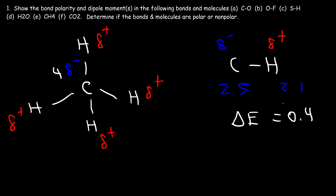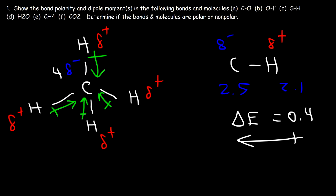The dipole moment points towards the electronegative carbon atom, giving us four arrows in the structure. If you draw the 3D structure and analyze the arrows correctly, the tetrahedral geometry is set up such that all dipole moments completely cancel each other, so the net dipole moment is 0. What we have is a molecule that contains nonpolar bonds, and the molecule as a whole is nonpolar overall.